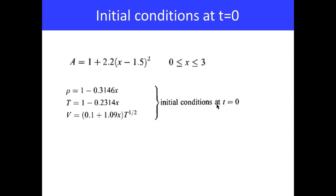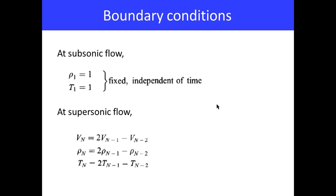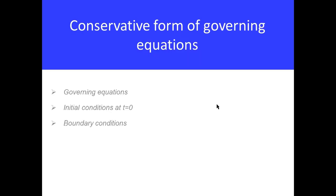The initial conditions are defined as functions of equations, which are well-calculated. For example, the area function defines the convergent and divergent profile. The boundary conditions assume density and temperature equal to one at the subsonic flow. For supersonic flow, the final temperature, velocity, and density are functions extrapolated using the previous two points.